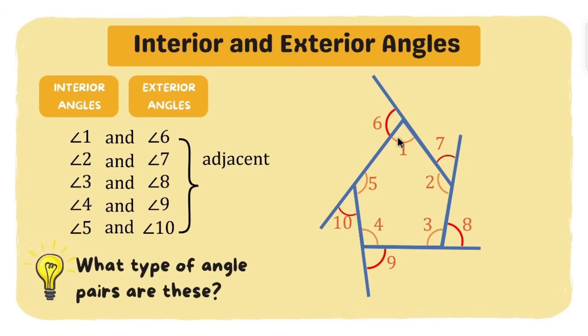Aside from being adjacent, what other angle pairs can you recognize from these pairings? Yes, they are also supplementary, meaning they create a straight line. If you add them together they will form a 180 degree angle. Now if they are both adjacent and supplementary, in short we can call them linear pair. So these pairings of interior angle and exterior angle are what we call linear pair. That's their relationship.